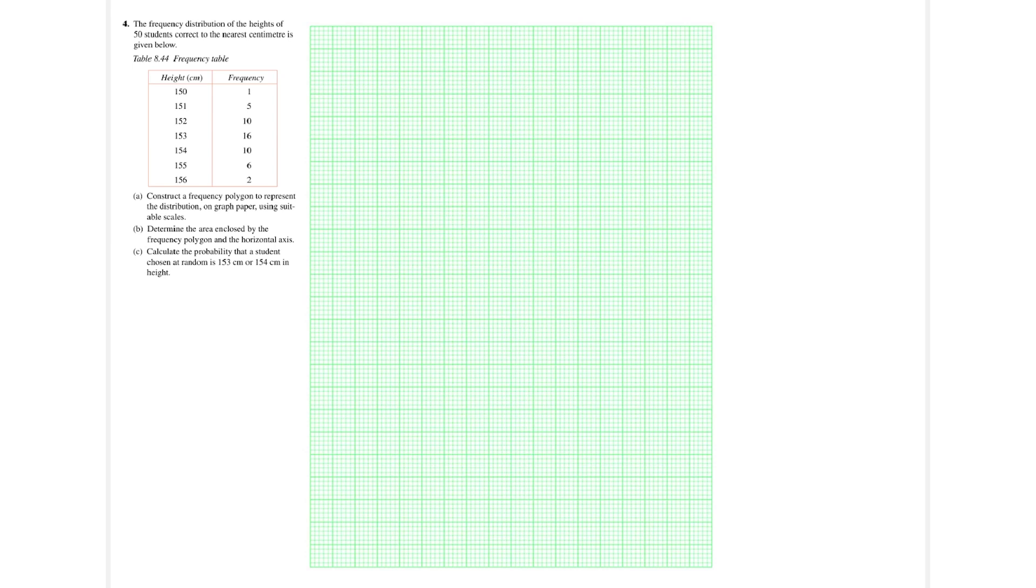Okay, so we have a question here. It says the frequency distribution of the heights of 50 students, correct to the nearest centimeter, is given below. This is about frequency polygons in regards to ungrouped data. We're given a distribution table and asked to construct a frequency polygon.